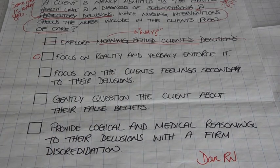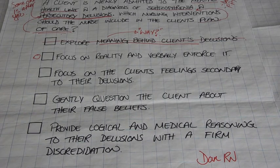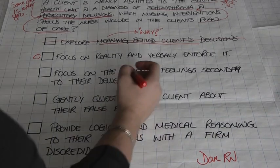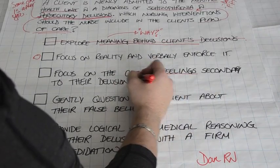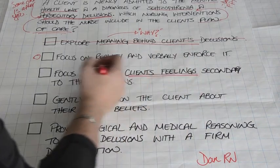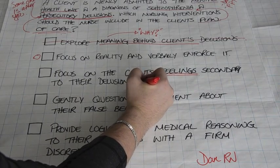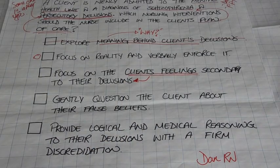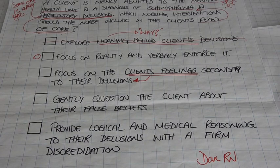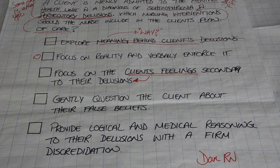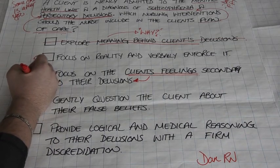The third answer choice says: focus on the client's feelings secondary to their delusions. This means we're focusing on how the client feels regarding their delusions. Does the nurse want to explore the client's feelings and know how they're feeling? Yes, we do want to know. But again, we're not sure — it's a select-all-that-apply. There might be other better ones. So we're going to put a circle beside it as well.